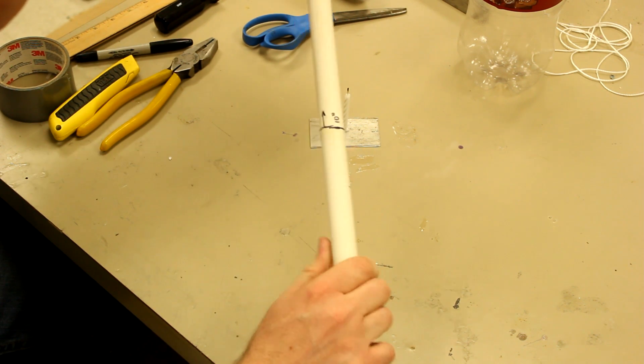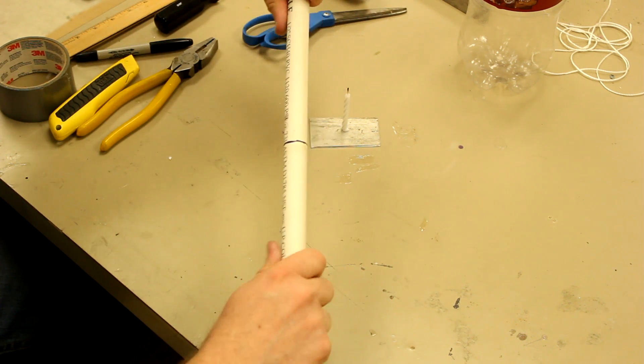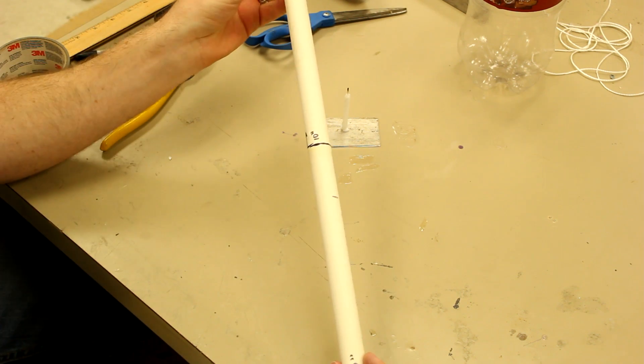See as that cools, it becomes rigid again. And that's how you get the seal.